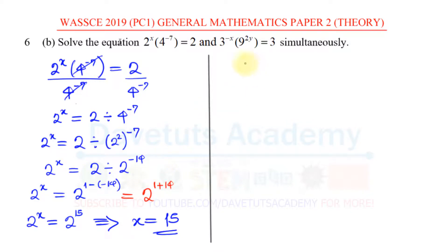In the other case, we are given 3^(-x) × 9^(2y) = 3. Here, in the same case, we know the value of x already. So this is the same as 3^(-15) × 9^(2y) = 3. So I can divide both sides by 3^(-15) over 3^(-15).